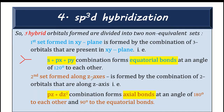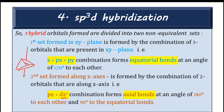The second set is formed along the z axis. We take the third p orbital, pz, which is along the z axis, and the dz² orbital, giving one hybrid orbital above and one below — forming the axial bonds. The equatorial bonds are at 120° to each other, at minimum repulsion, and the axial bonds are perpendicular to the equatorial plane at 90°.